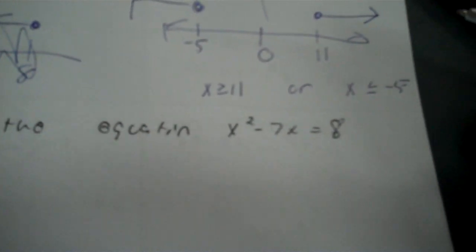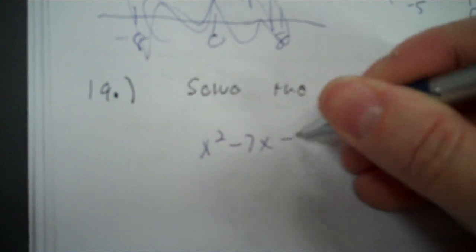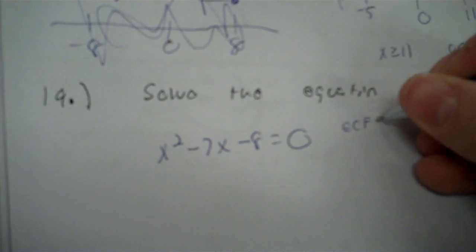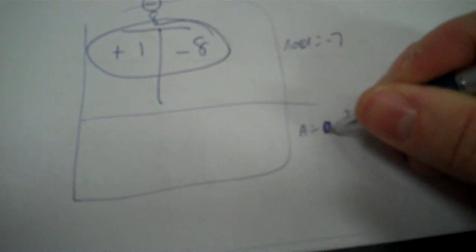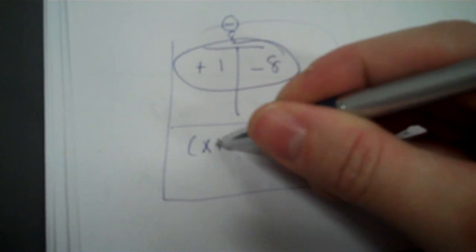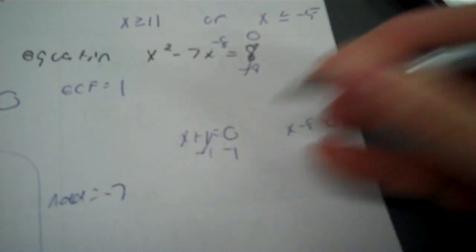Solve the equation: X squared minus 7X equals 8. This is easy — there are two roots. Move the 8: X squared minus 7X minus 8 equals 0. GCF would be just 1. Make a table: negative 8 as a product, positive times a negative, adding to get negative 7. 1 and 8 — bingo. It would be X plus 1 times X minus 8. My roots: X plus 1 equals 0 gives negative 1, and X minus 8 equals 0 gives 8.